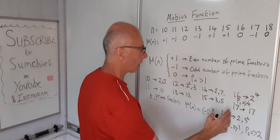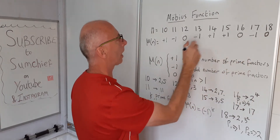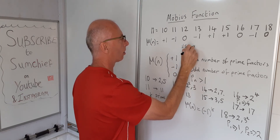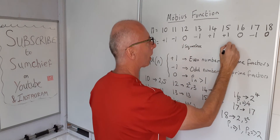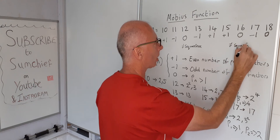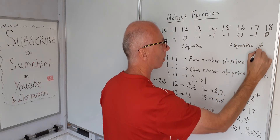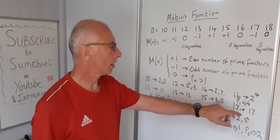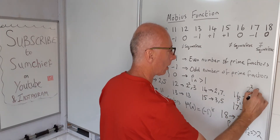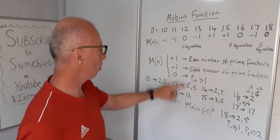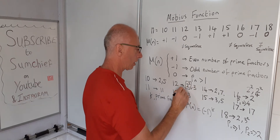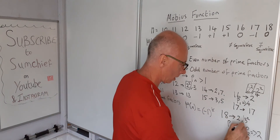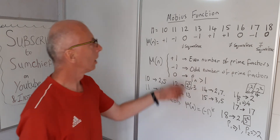Square-free means numbers that are not like 16, 12, or 18 — these are not square-free. Basically it means none of the prime factors can be squared. For 16 you have 2 to the 4th, which contains 2 squared. For 12 you have 2 squared. And for 18 you have 3 squared. That's why all of those give mu equal to 0.